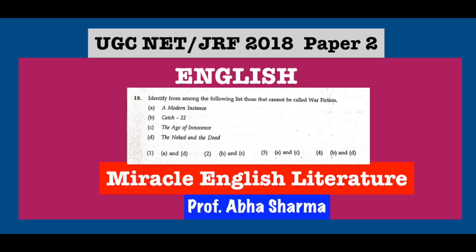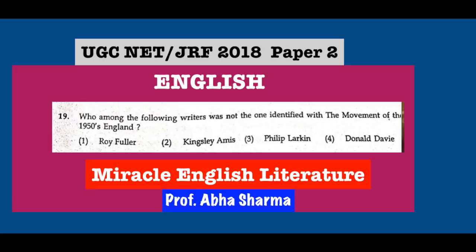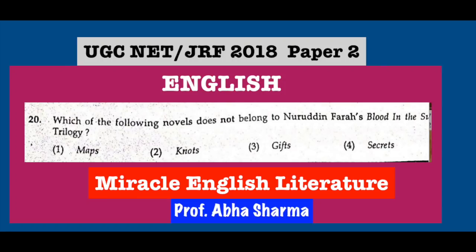Question number 19: Who among the following writers was not identified with the Movement of 1950s England? The Movement of the 1950s is also called the Angry Decade — people were really frustrated and angry. Writers like Kingsley Amis, called the Angry Young Man, Philip Larkin, and Donald Davie all belong to the Movement. The correct answer is Roy Fuller, who was not from this movement.